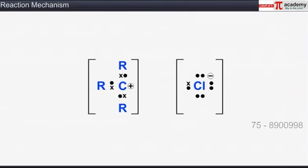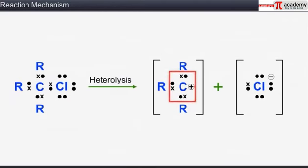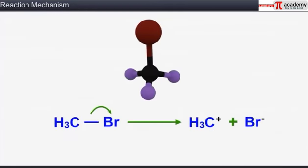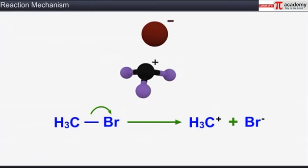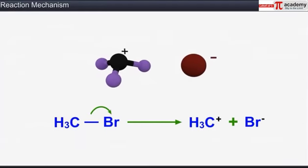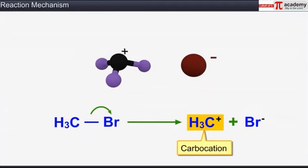After heterolytic cleavage, the atom that loses the bonded electrons gets a sextet electronic structure and acquires a positive charge. For example, in the heterolytic cleavage of bromomethane, the shared electron pair goes to the bromine atom, leading to the formation of a bromide anion and a methyl cation. A positively charged carbon with a sextet, which is the methyl cation here, is called a carbocation or a carbonium ion.